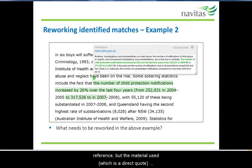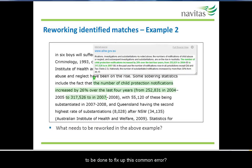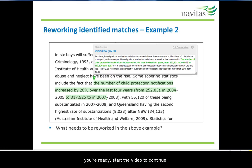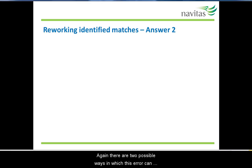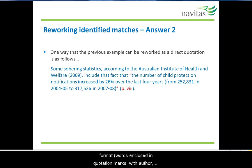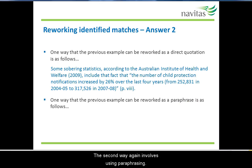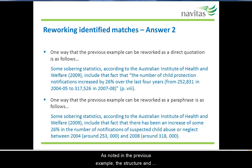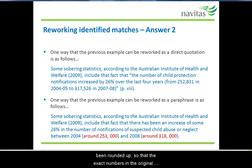In this second match, the student has provided a reference but the material used, which is a direct quote, is not cited correctly. Can you work out what needs to be done to fix this error? Please pause the video and take some notes. Again, there are two possible ways to fix it. The first involves putting the exact material from the source into a direct quote format — words enclosed in quotation marks with author, year and a page number. The second way involves paraphrasing, where the source material is reworded to convey the same meaning but in your own words. Note that the numbers used in the paraphrase have been rounded up so that the exact numbers in the original source are not duplicated.